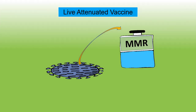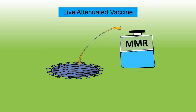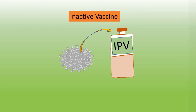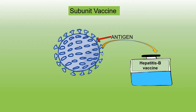A weaker strain of the pathogen is used in live attenuated vaccines. The vaccine used for mumps, measles, and rubella is a type of this vaccine. Dead pathogens are used in inactivated vaccines, and we are required to take this vaccine more than once as booster shots. The polio vaccine via injection is a type of inactivated vaccine. In subunit vaccines, the antigens from pathogens are used. The Hepatitis B vaccine is a type of this vaccine.